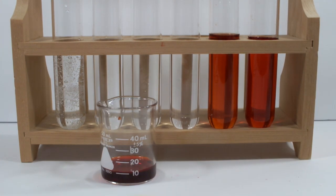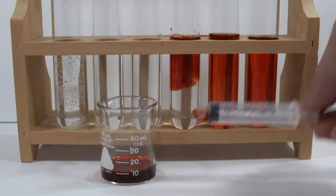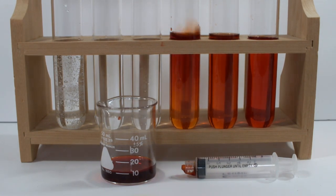Next up is some drugstore 3% hydrogen peroxide. It is an oxidizer, but it's not really a very strong one. So let's see what the ferroin says. Well, apparently it says it's not strong enough to turn it blue.